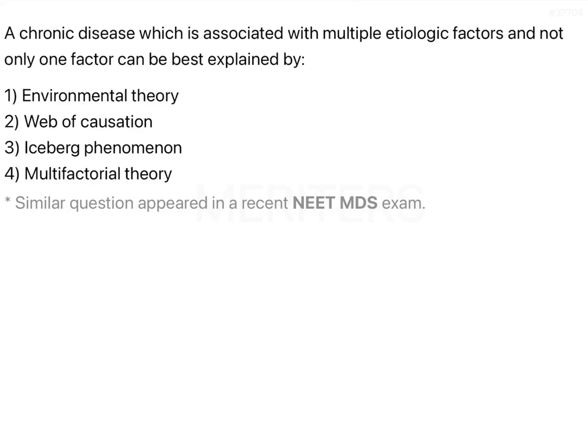Chronic disease, which is associated with multiple etiologic factors and not only one factor, can be best explained by the web of causation. Chronic diseases — for example, cardiovascular disease — cannot be explained by a single etiologic factor. There is basically a web of interaction of multiple factors which interact with each other and lead to the chronic disease.